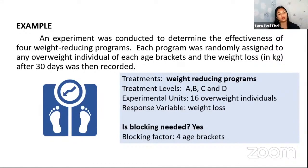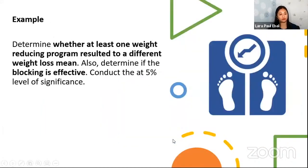So there are four programs. Each program was randomly assigned to any overweight individual of each age bracket and the weight loss in kilograms after 30 days was then recorded. Just a quick recall: treatment here is the weight reducing program and then the treatment levels could be level 1, 2, 3, 4 or A, B, C, D. Experimental units, we have 16 individuals. Then response variable is the weight loss. So is blocking needed? Yes. Why? Because age can have an effect on the weight loss. So you have blocking factor for age brackets.